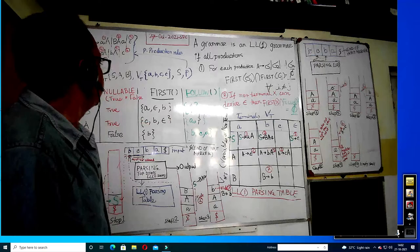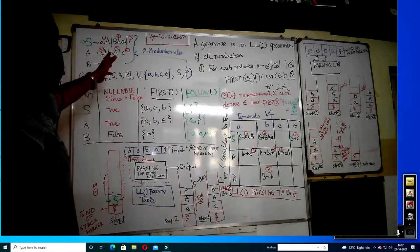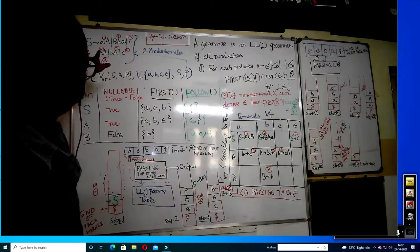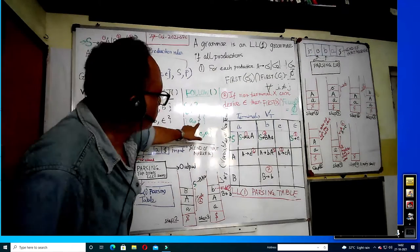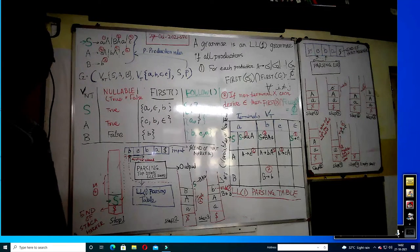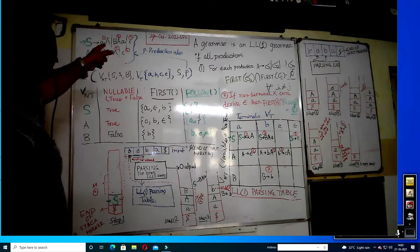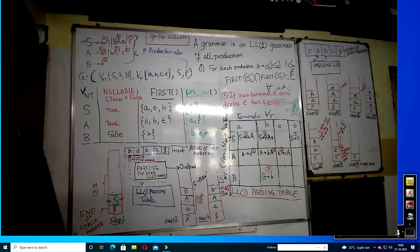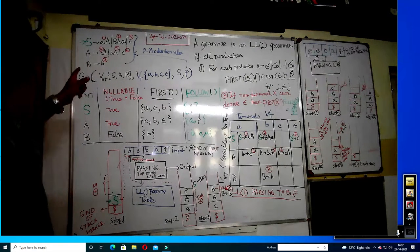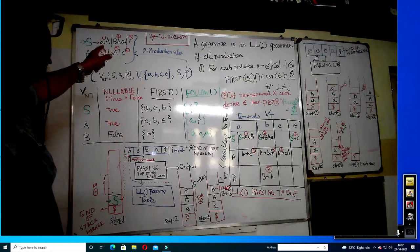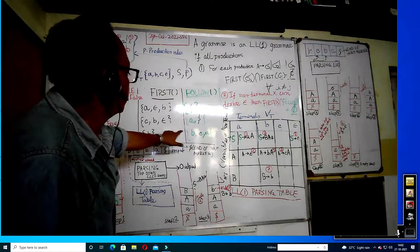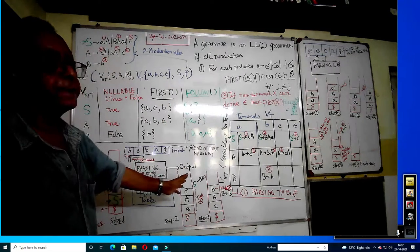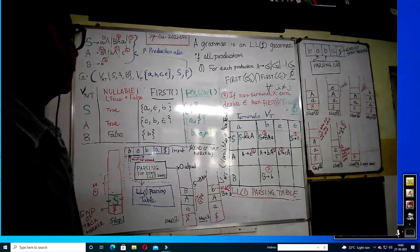FIRST of A is not empty — A is nullable. FIRST of B is {b} since B cannot go to epsilon and there are no other rules. Now for FOLLOW: FOLLOW of S is {dollar} because S does not appear on the right-hand side anywhere. For FOLLOW of A, since A appears at the end in rule 1, dollar is in FOLLOW of A. Also, since small a comes after capital A in rule 2, small a is in FOLLOW of A. FOLLOW of B: looking at rule 2, FOLLOW of B includes FIRST of A, which is {C, B} — epsilon cannot be in FOLLOW, and dollar cannot be in FIRST. One important rule: epsilon should not appear in FOLLOW, and dollar should not appear in FIRST.